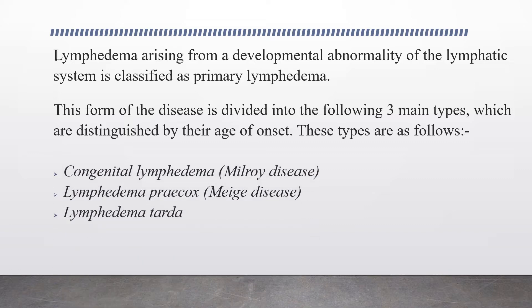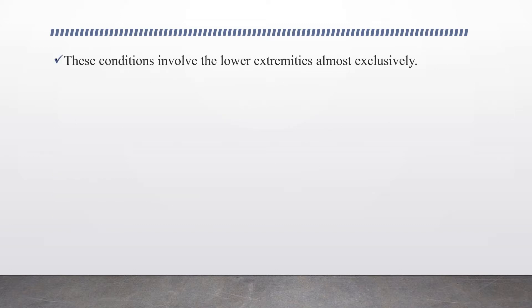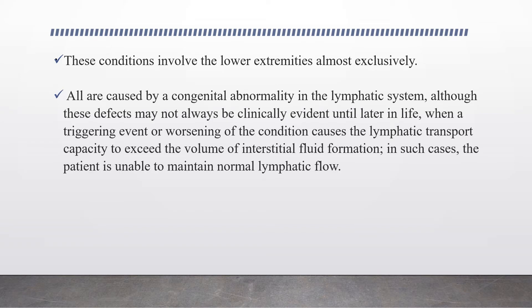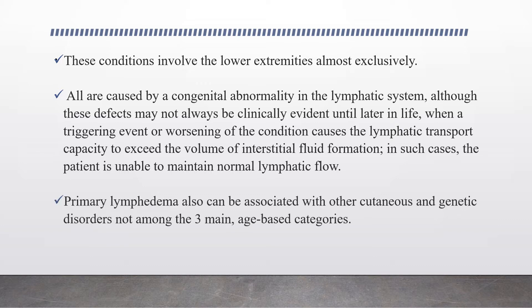The three types are: congenital lymphedema, lymphedema praecox, and lymphedema tarda. These conditions involve the lower extremities almost exclusively. All are caused by congenital abnormalities in the lymphatic system, although these defects may not always be clinically evident until later in life — when a triggering event causes the lymphatic transport capacity to exceed the volume of interstitial fluid formation, and the patient is unable to maintain normal lymphatic flow. Primary lymphedema can also be associated with certain conditions not among the three main age-based categories.